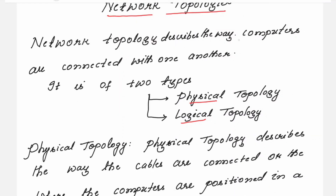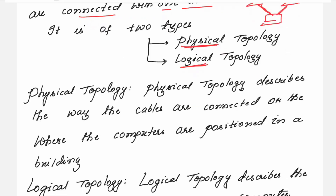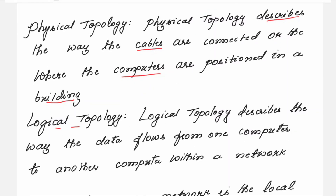It describes the way computers are connected with one another. In physical topology, you are only describing the way the cables are connected or where the computers are positioned in a building. But in logical topology, it describes the way the data flows from one computer to another computer.